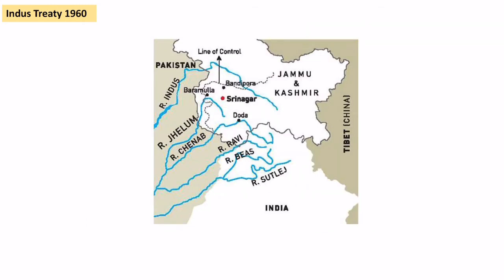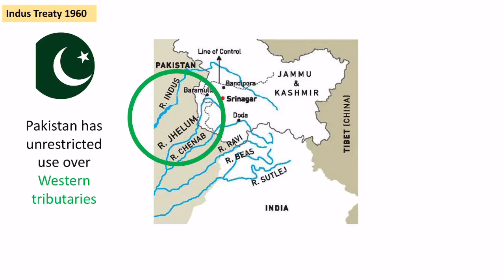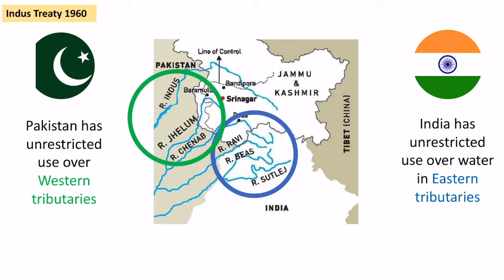The treaty was relatively successful. Pakistan was given unrestricted use over the western tributaries, and equally India would have unrestricted use over waters in the eastern tributaries. They were sharing out the water, which meant both countries were often relatively happy with this deal. The only issue is that unrestricted use didn't mean the other country couldn't use those waters — India could use water from the western tributaries, but Pakistan had control over them.